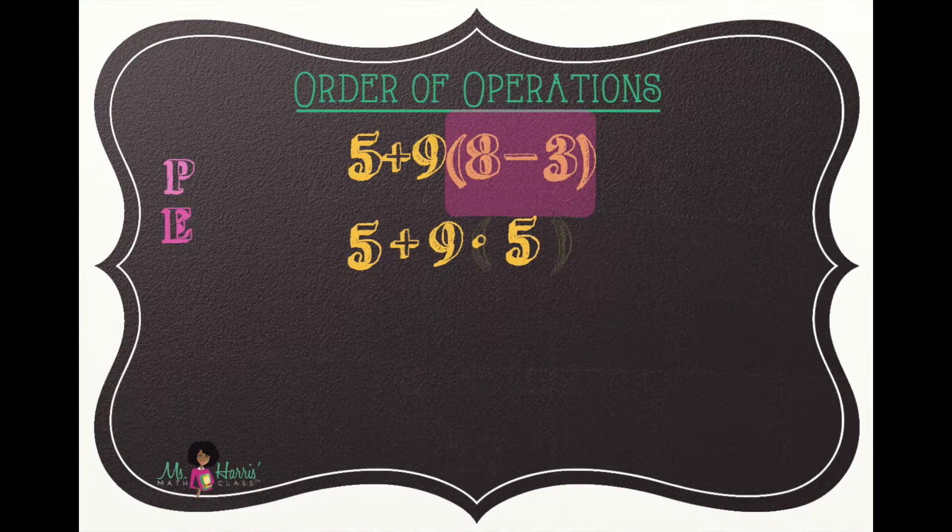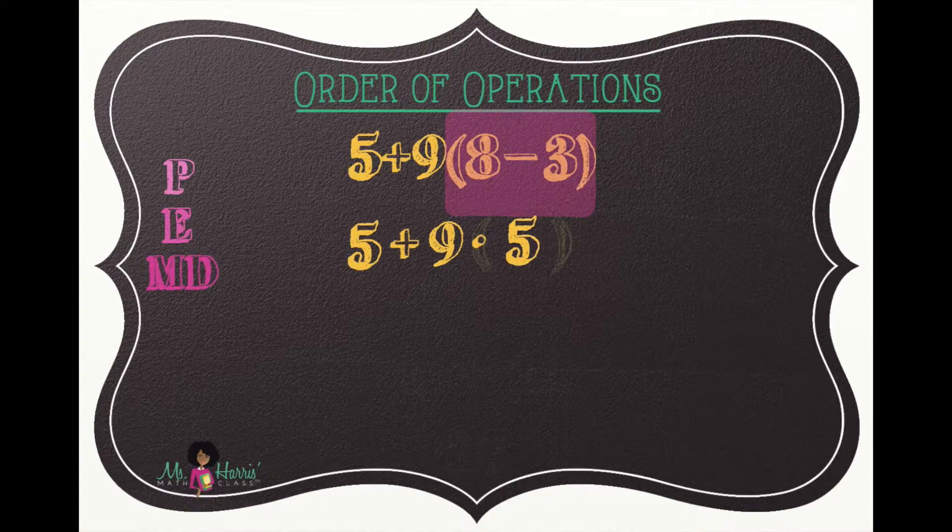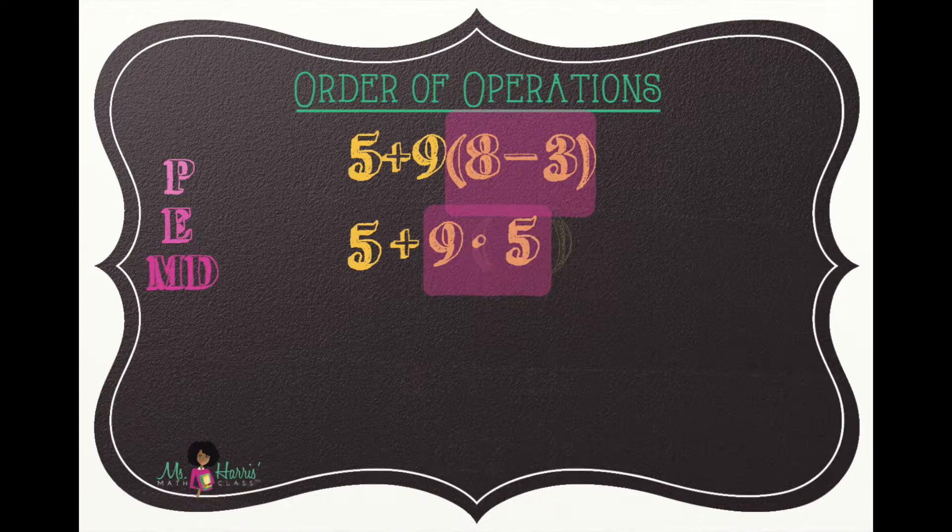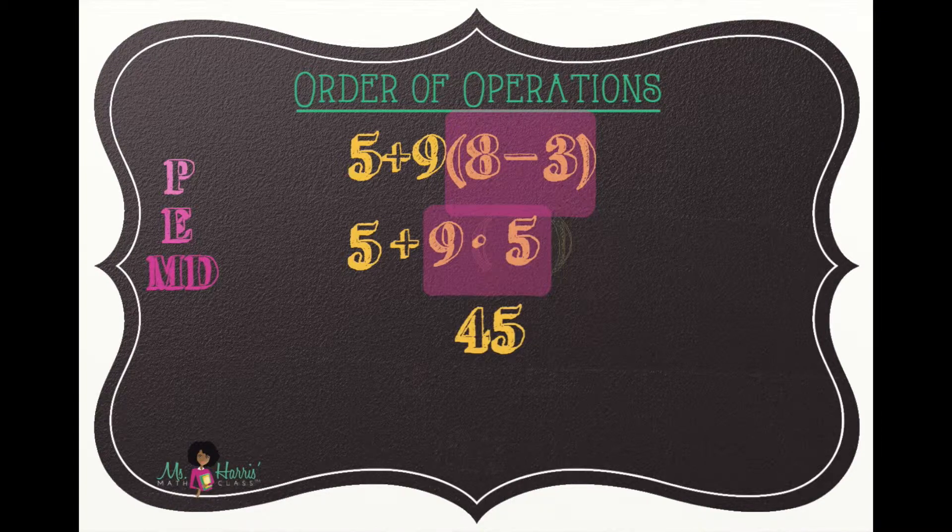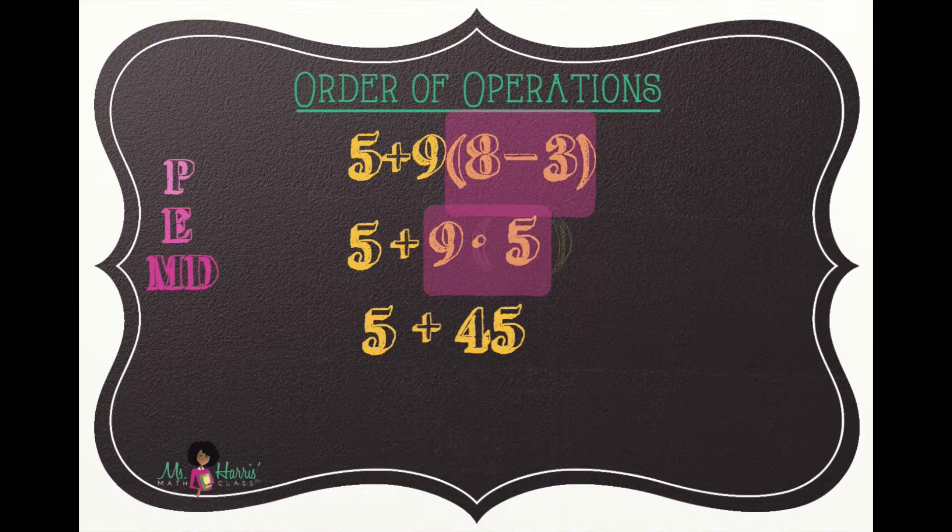We don't have exponents, but we do have multiplication or division. We highlight nine times five, which is 45. We bring down the remaining number and operation. We have addition, and so we add five plus 45, which is 50.